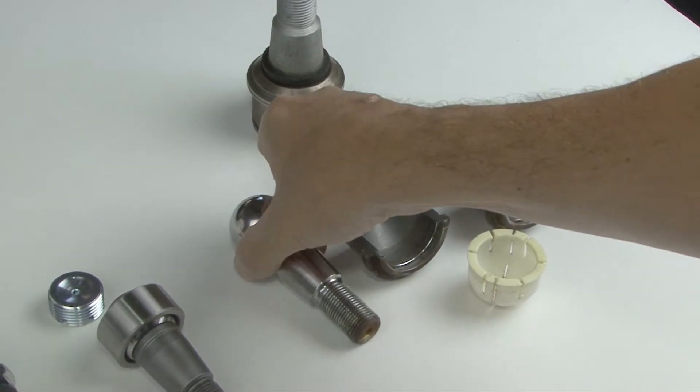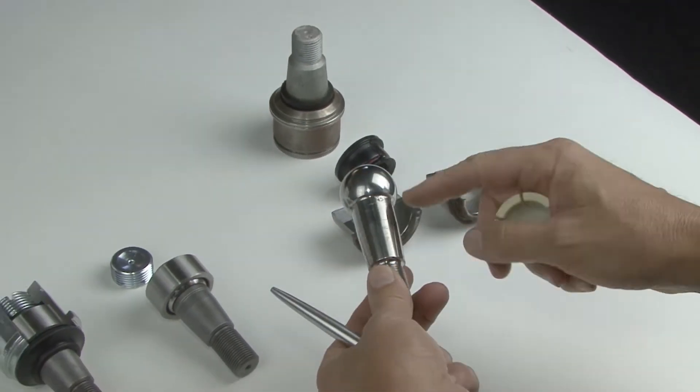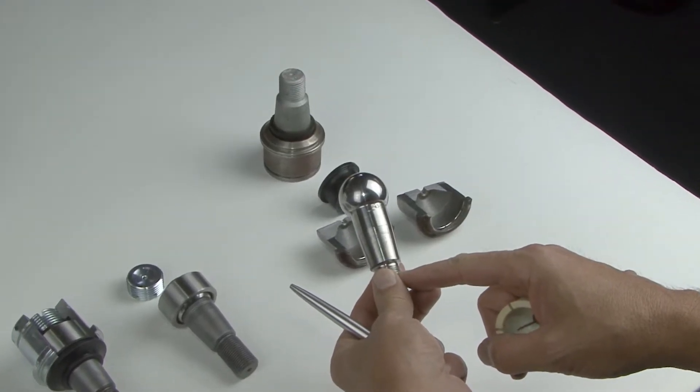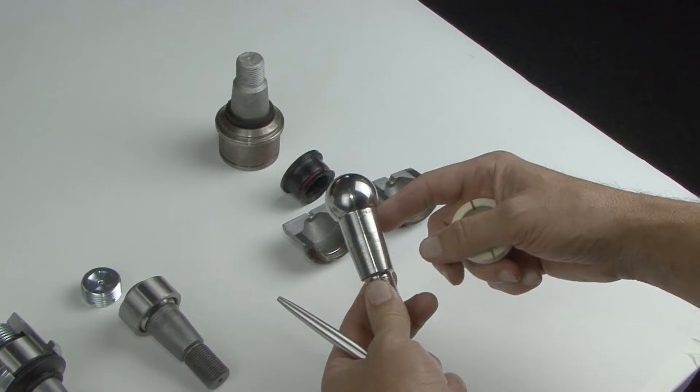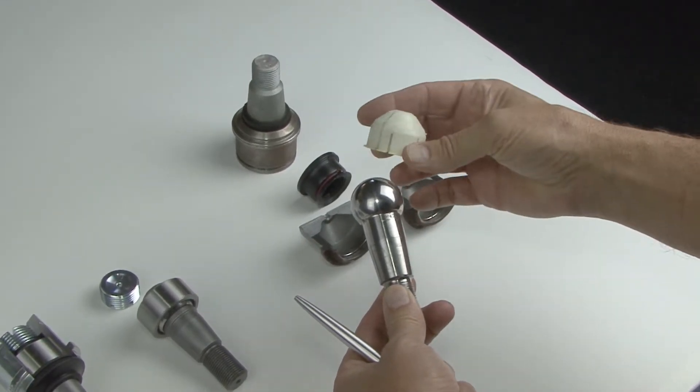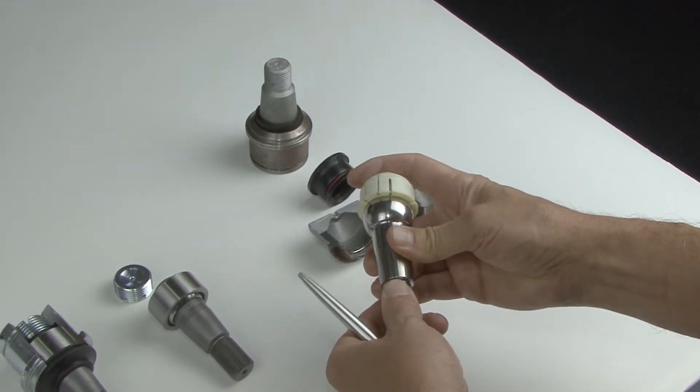The stem has a taper on it that presses into a knuckle or an end forging and has a ball on the end of it, hence the name ball joint. This is the bearing surface that works with that ball joint. When it's put together, this is pressed onto the end of that ball and it swivels around like that.